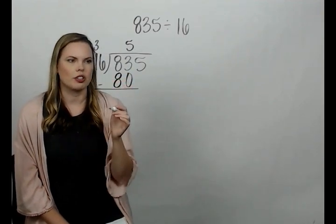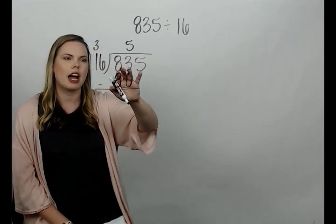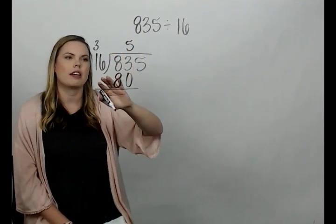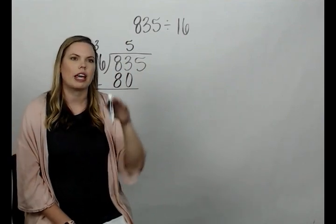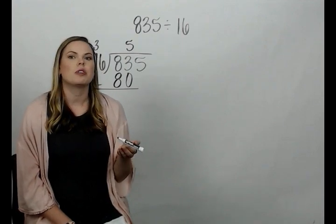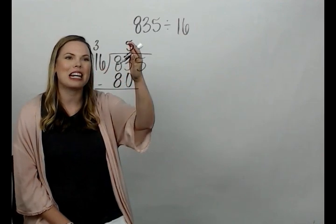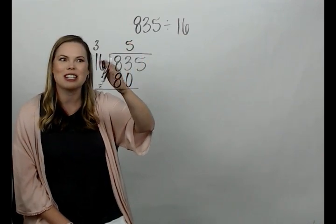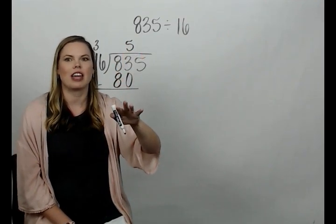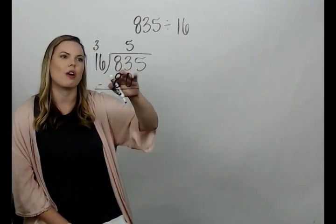Then we do subtraction. So what we're doing here is we are seeing how many times, how many hundreds and there were none. We can't put 16 into 8, so it's not going to go in a hundred times. And so we're seeing how many tens, 16, like how many tens times 16 is going to go into 83 and there's five of them. So this is kind of everything 50. Okay. So there's five tens times 16 that will go into the 83.